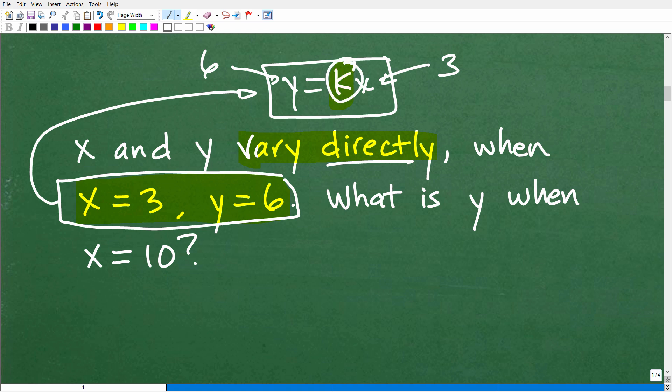So using this formula and this data, we can find k. Once we have k, we can create a general formula, and then we can easily figure out what y is when x is equal to 10. So the first step in these problems is to identify what type of variation you're dealing with. In this particular problem, we're dealing with direct variation. So we're going to use the right formula. Then we need to get k. And then we need to build our general formula and then solve and answer the question.